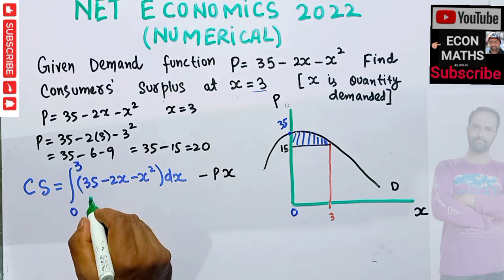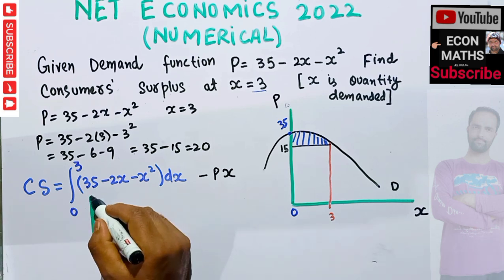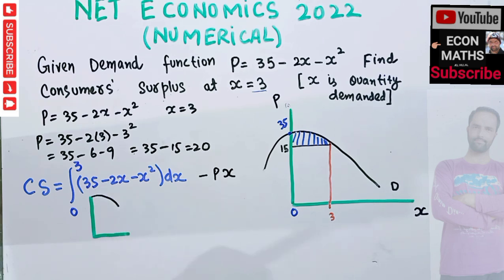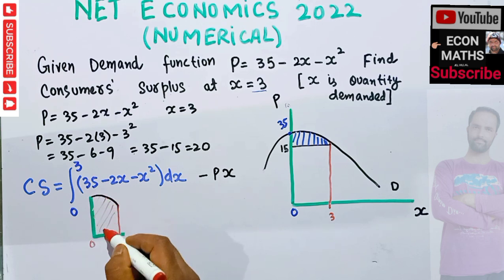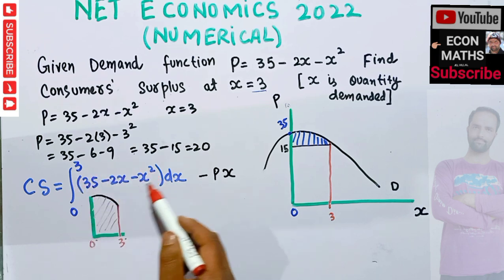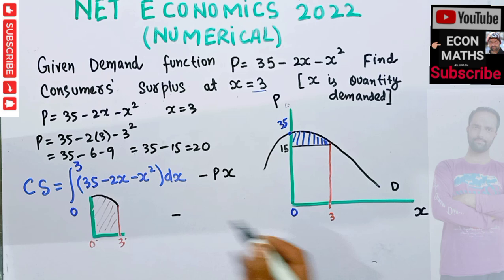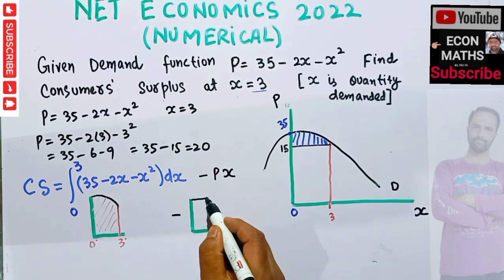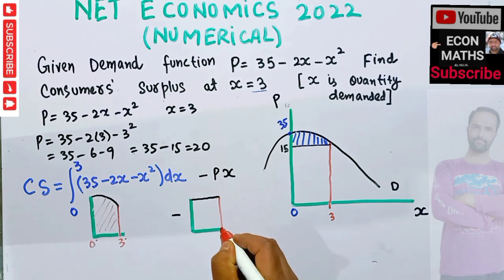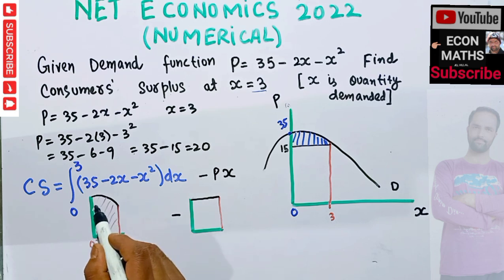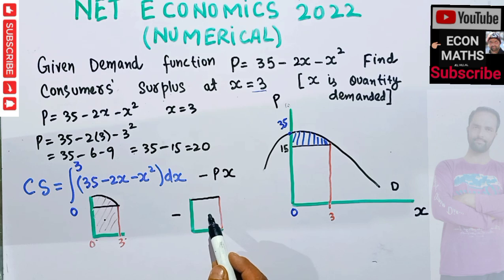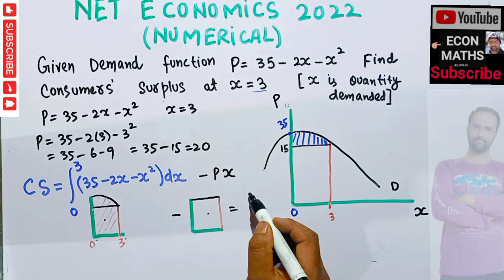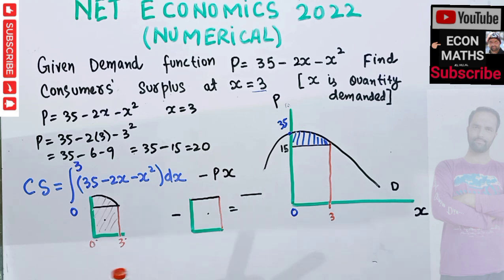The definite integral from 0 to 3 denotes the whole region under the demand curve. We first calculate the area of this whole region using the definite integral from 0 to the equilibrium quantity, then subtract the lower rectangular region. When we subtract this rectangle from the whole region, we get the upper region, which is our consumer surplus.